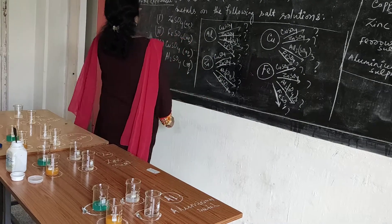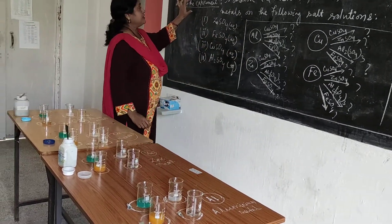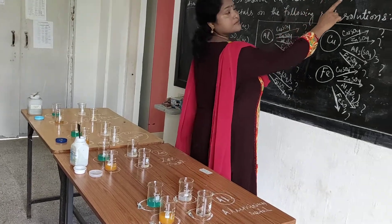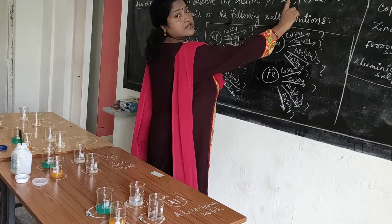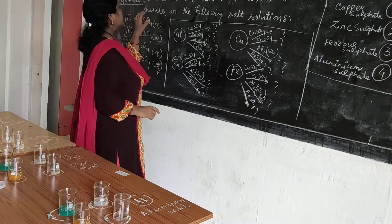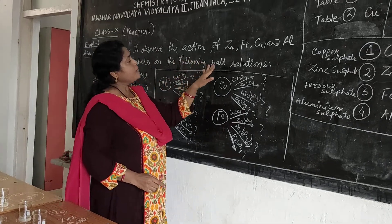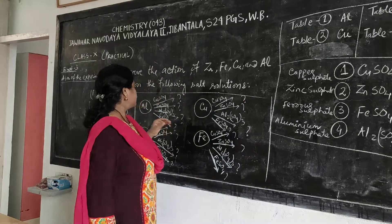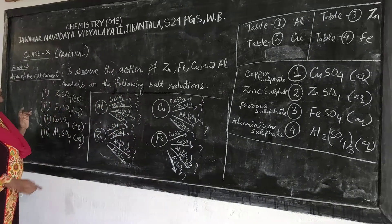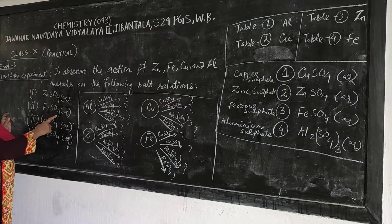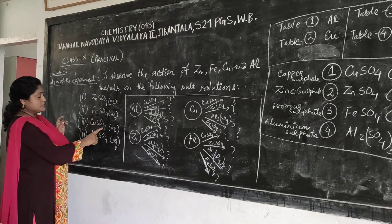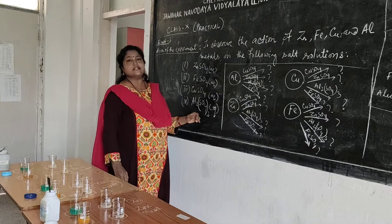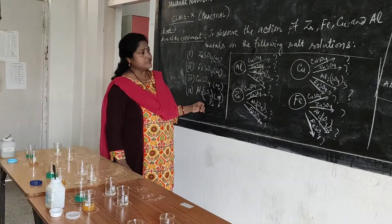We are having experiment 3. The aim of the experiment is to observe the action of zinc, iron, copper and aluminium metals on the following salt solutions. We have taken zinc sulfate solution, iron sulfate (ferrous sulfate), copper sulfate solution, and aluminium sulfate solution. The correct formula for aluminium sulfate is Al2(SO4)3.